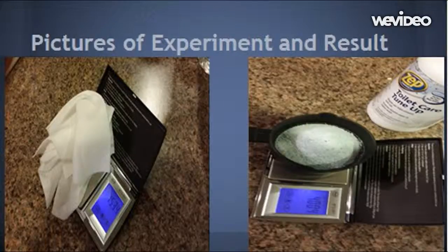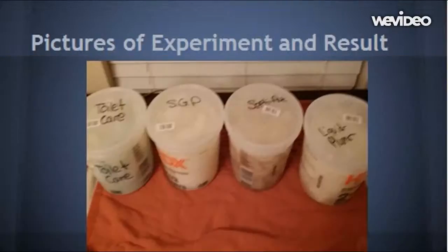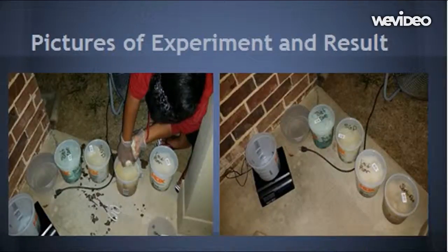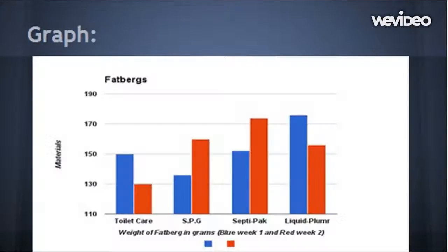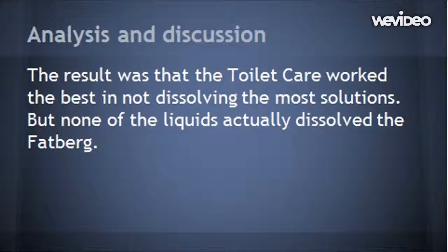This data shows that Toilet Care worked the best for week one, and Toilet Care again worked the best for week two. So overall, Toilet Care worked the best. The other results showed that Septic Pack, Liquid Plumber, and SGP were the worst performers.